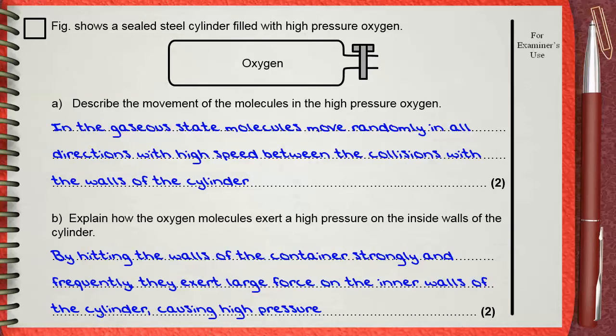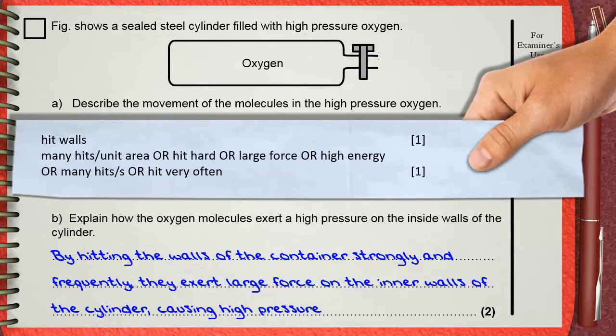The two marks are for hitting the walls. This is one mark. The second mark is for saying any one of the following: many hits per unit area, or hit hard, or large force, or high energy, or you can say many hits per second, or hit very often. And these are what you will get the two marks for.